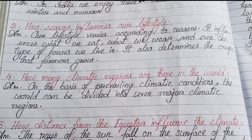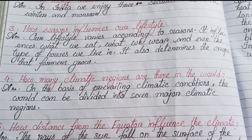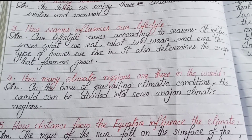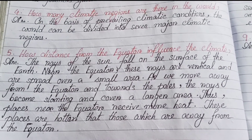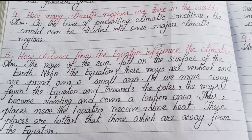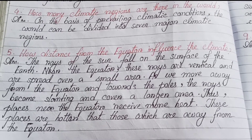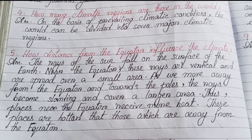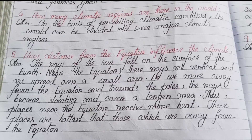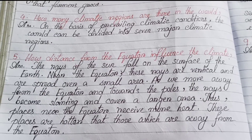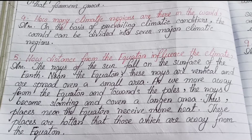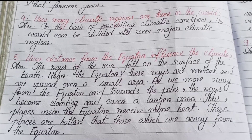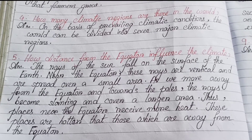Number four: How many climatic regions are there in the world? On the basis of prevailing climatic conditions, the world can be divided into seven major climatic regions. Number five: How does distance from the equator influence the climate? The rays of the sun fall on the surface of the earth near the equator — these rays are vertical and spread over a small area. As we move away from the equator and towards the poles, the rays become slanting and cover a larger area. Thus, places near the equator receive more heat and are hotter than those away from the equator.